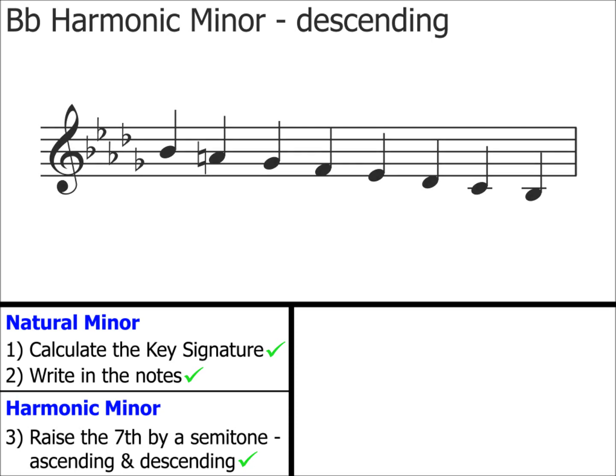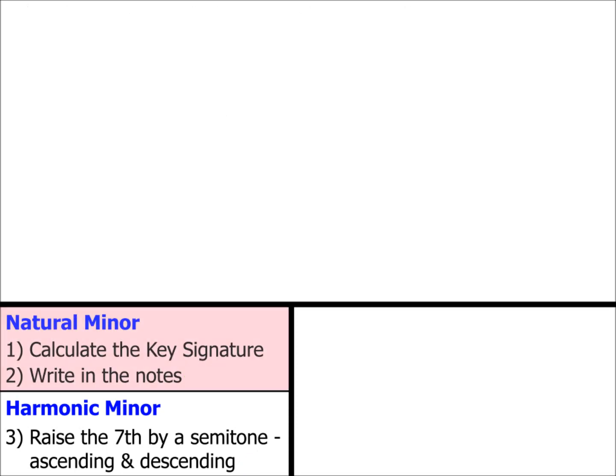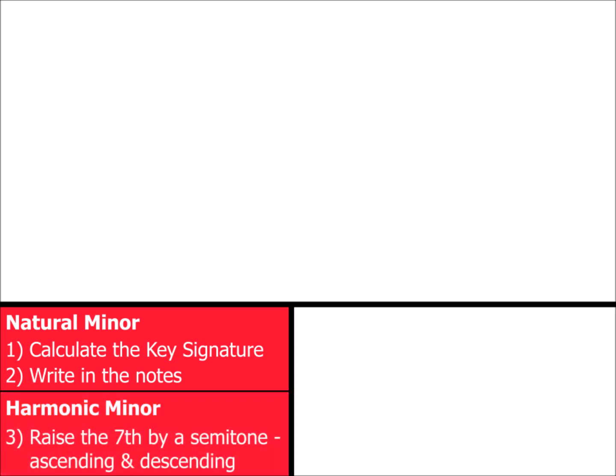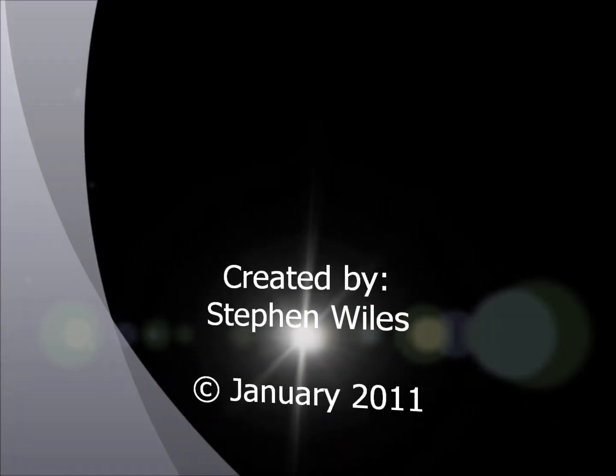So remember, once you've calculated the natural minor scale, to change it to a harmonic minor scale is just a simple tweaking of the seventh note — you raise it by a semitone in both the ascending and descending scales. I do hope that this video has been useful to you. In part three, I'll be explaining how to calculate melodic minor scales.